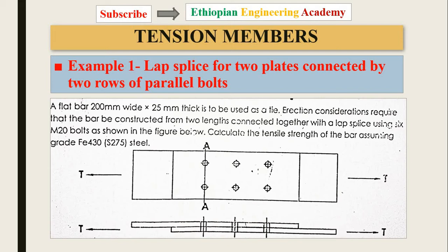A flat bar 200 mm wide and 25 mm thick is to be used as a tie. Erection consideration requires that the bar be constructed from two lengths connected together with a lap splice using six 20 mm diameter bolts, as shown in the figure. Calculate the tensile strength of the bar assuming grade Fe 430, that is S275 steel.